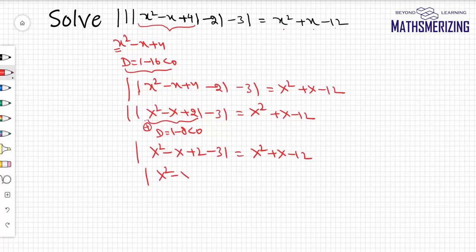So we can write x² - x + 2 - 3 = x² + x - 12, which simplifies to x² - x - 1 = x² + x - 12.